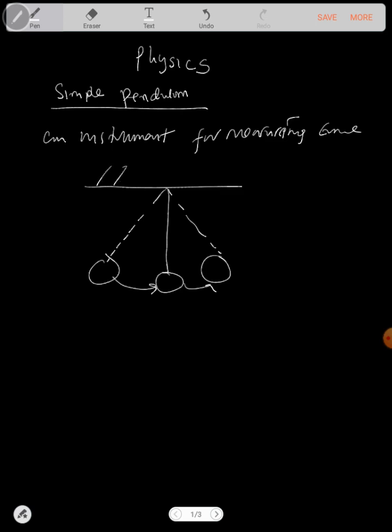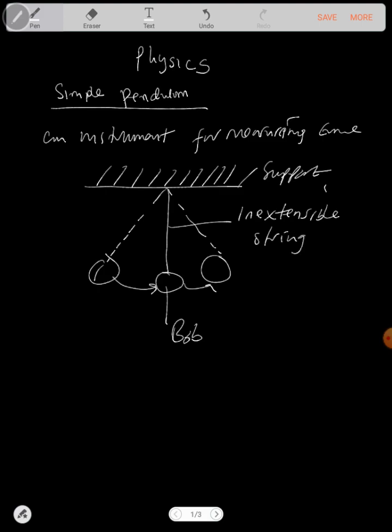So it has got a support, call it a support. This is the support. Then it has got these round things we call them the bob. Then it has got an inextensible string. It's a very thin string such that it doesn't affect the mass of the bob as it's swinging.